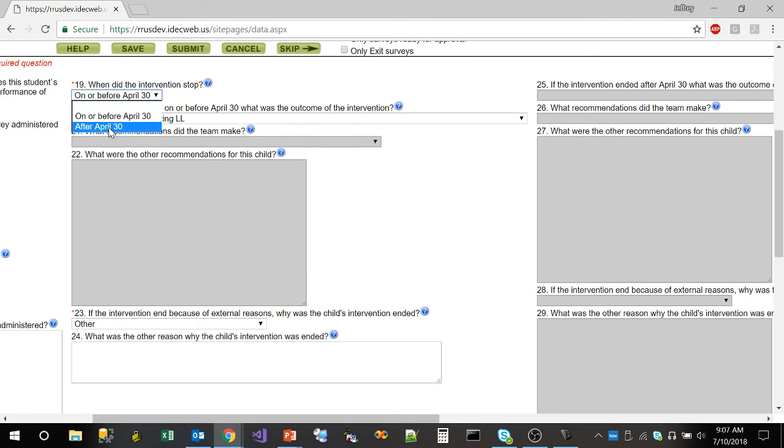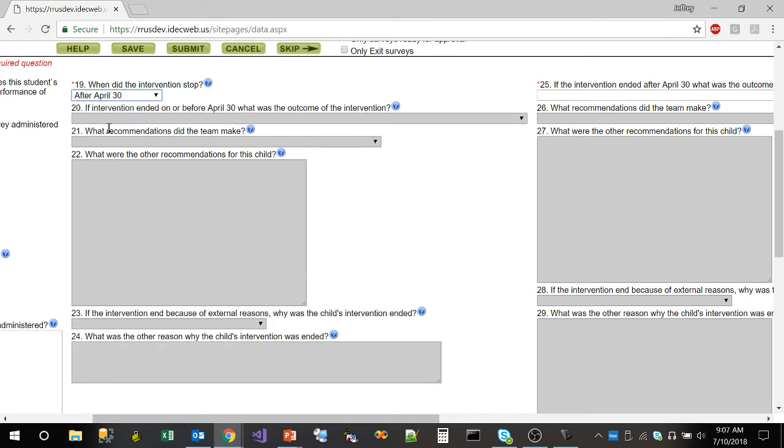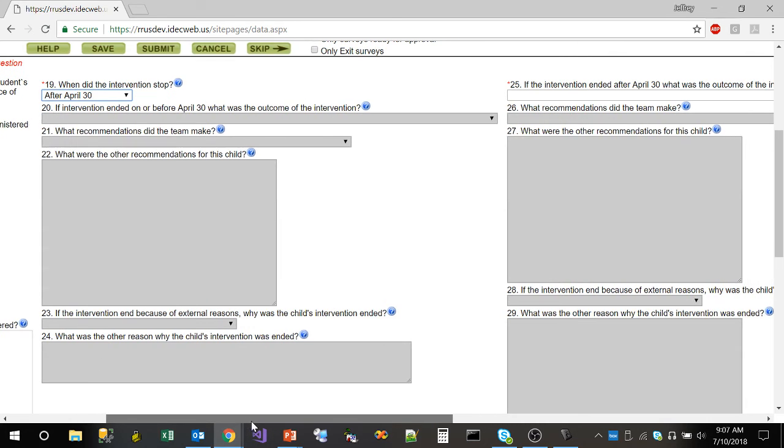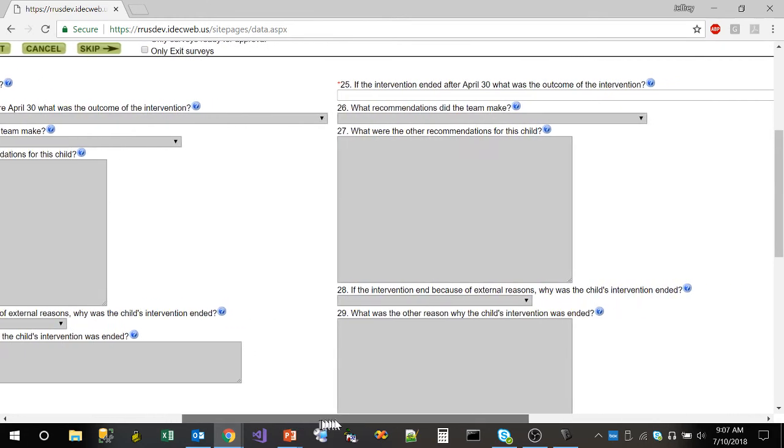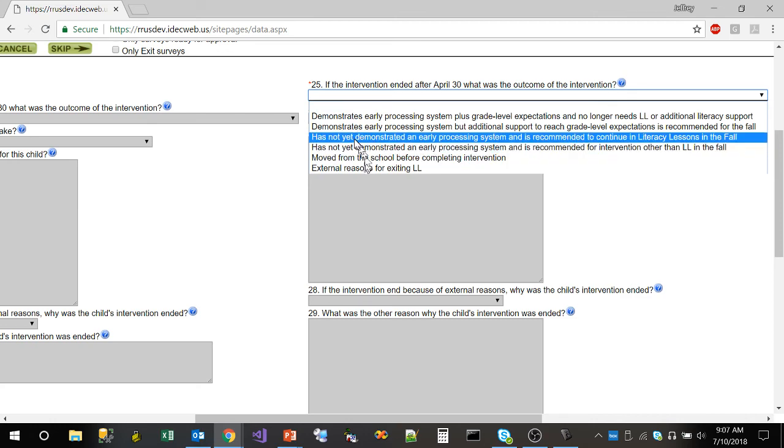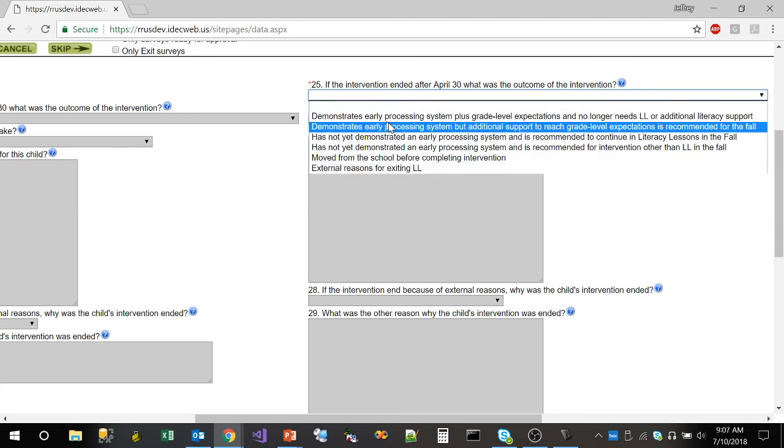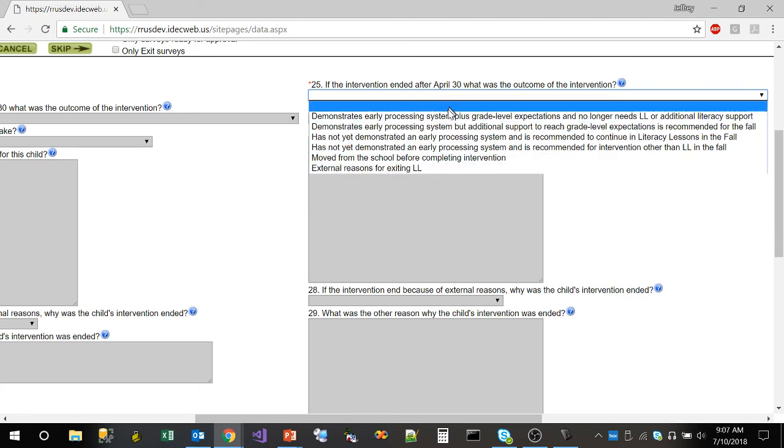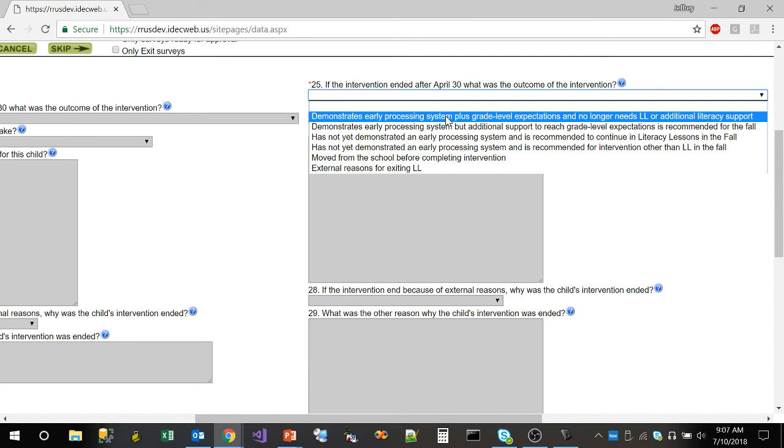All right. So now if they answer after April 30th, teachers won't have to respond to questions 20 through 24. What will happen is question 25 becomes enabled. And it has one extra status indicator. So once again, right here, the next question on 25 is, what is the outcome of the intervention? For example, if we select the first one, there's no other additional information needed because in this scenario, we're saying that the child no longer needs literacy lessons or additional support.